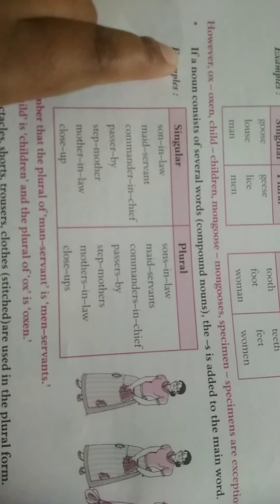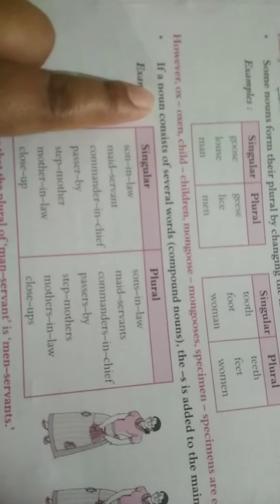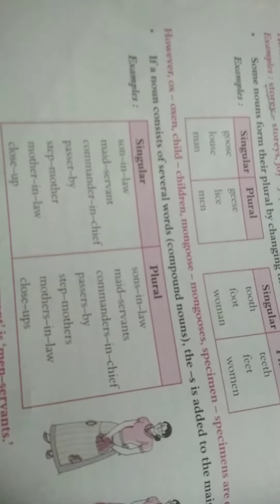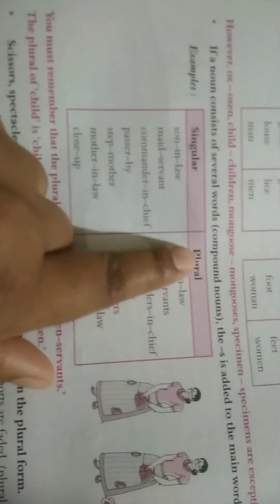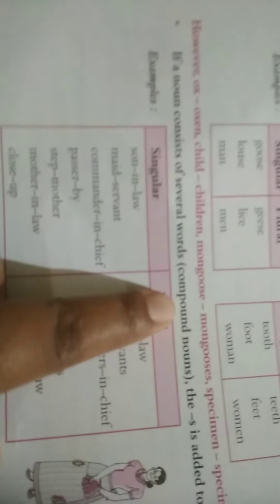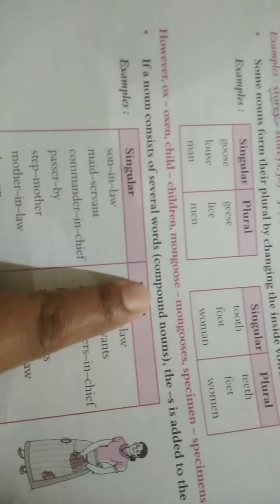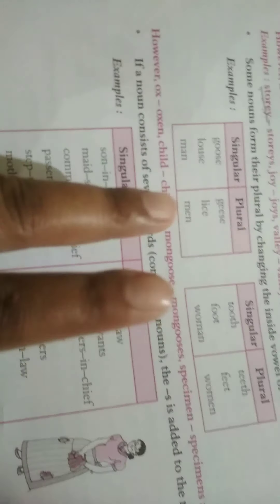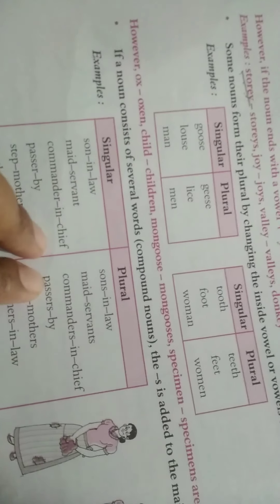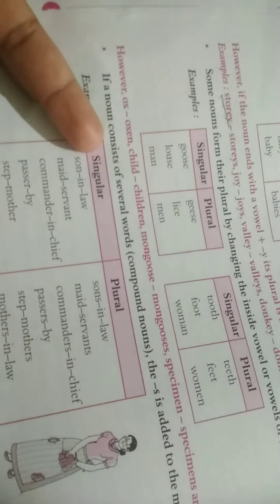Now, the next is, if a noun consists of several words, compound nouns, the S is added to the main word. Now, what do you understand by compound noun? Compound nouns are the nouns made up of two or more words. Playground, class plus room, classroom. Then, dining plus table, dining table. Okay.